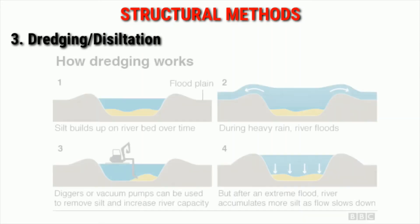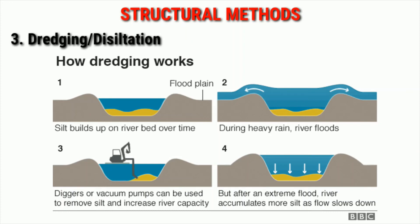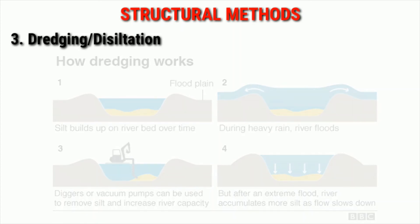Another method for flood control is dredging of rivers. The basic aim of dredging is to remove silt. Silt is a sedimentary material made of fine sand, clay, and small-sized particles of rock that form the river's bed. By dredging or removing silt, it can increase the capacity of the river to carry water downstream. The process of dredging involves a vacuum pump that is used to remove the silt from the river bed.